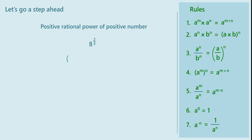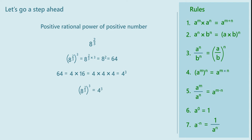If we raise it to power 3, we obtain 8 raised to 2 upon 3, raised to 3, equals 8 raised to 2 upon 3 into 3, equals 8 raised to 2, which is 64. Since 64 equals 4 into 4 into 4, that is 4 cubed, we can write 8 raised to 2 upon 3, whole raised to 3, as 4 raised to 3, and hence 8 raised to 2 upon 3 equals 4.